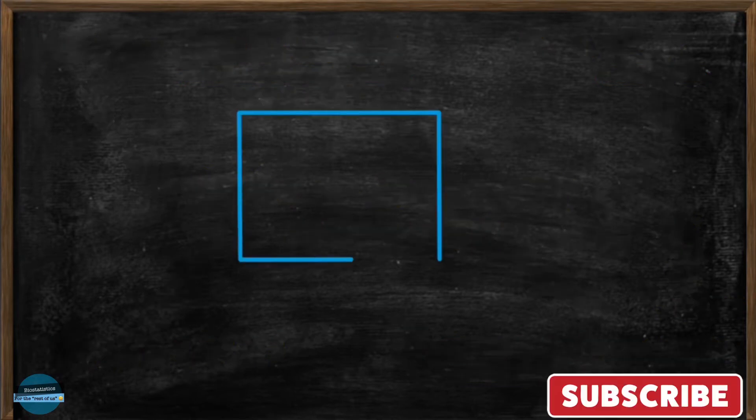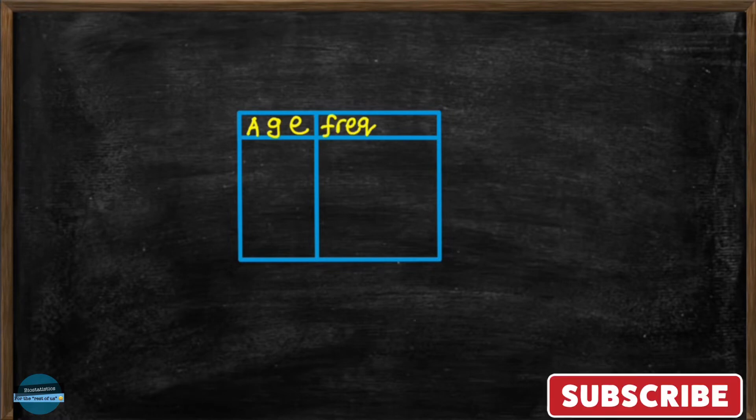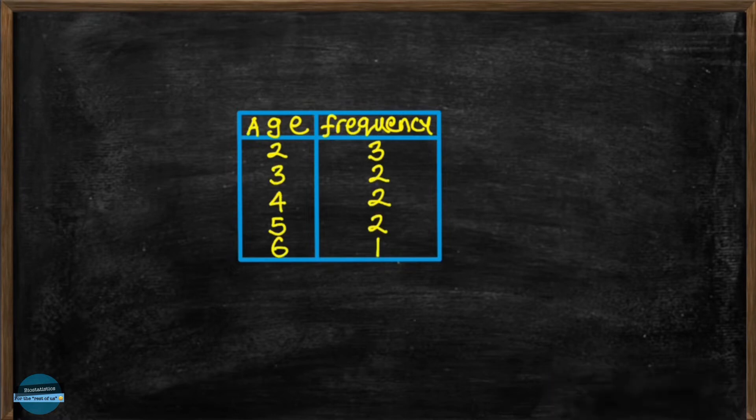Here in a frequency table, we have the values listed in a table with the number of times they occur. That's what we call frequency. So we'll see it like this: Age on one side and then frequency on another column. So this time you see that for each of the age measurements, we have their frequencies. So for the age 2 years old, there were 3 children,